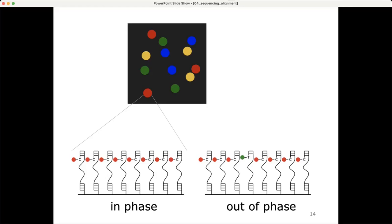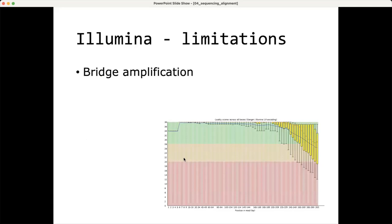Eventually the base quality becomes lower and lower towards the three-prime end of the read until the quality isn't high enough to be sure the called base can be used for analysis. This is the out-of-phase signal problem that limits Illumina read length. Long read sequencing methods do not have this issue because they can get a signal out of a single molecule — they only sequence a single molecule, not multiple molecules in a bridge amplification spot — so in principle the read length is unlimited.